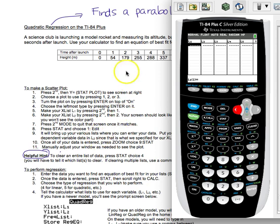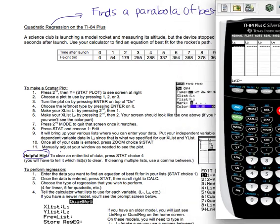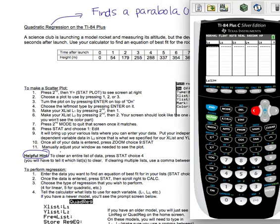So now we are going to go ahead and enter our data. So our time after launch is our list 1 data. So I'm just going to go ahead and enter 0 through 9. You press enter between each entry, so 0, enter, 1, enter, so on and so forth. I'm going all the way down my list from the table until I get to 9, which was the last value there.